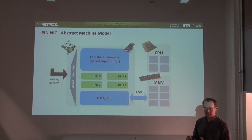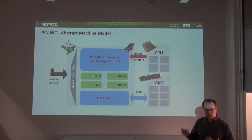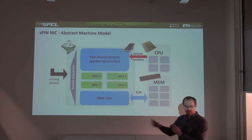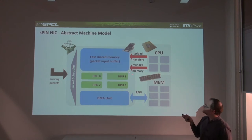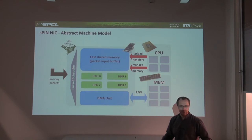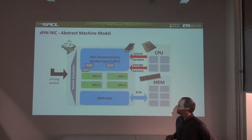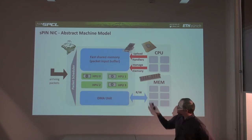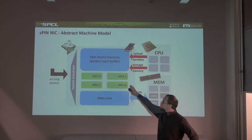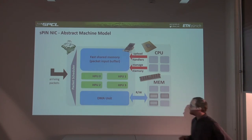The CPU in SPIN's abstract machine model has a very limited role — it does not perform packet processing as in today's RDMA systems. Here, the CPU simply uploads handlers to the fast shared memory, which are then processed at the HPU. It's still a von Neumann architecture: you upload small code — really like a GPU kernel — to the device, which is then executed for incoming packets. Memory management of the NIC is performed by the CPU, making it a remote-controlled accelerator like GPUs and FPGAs today.